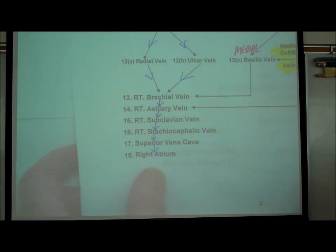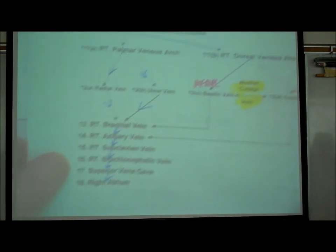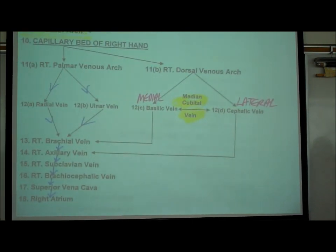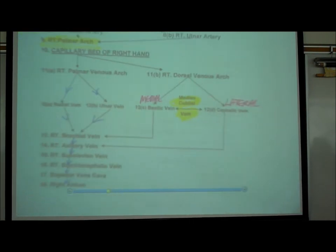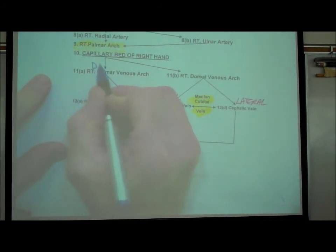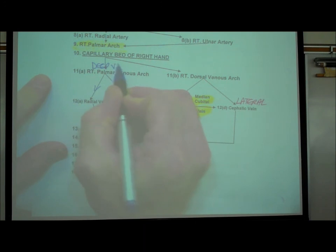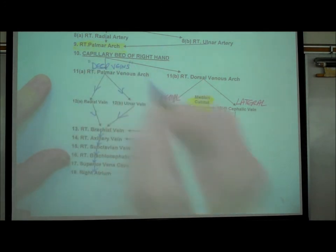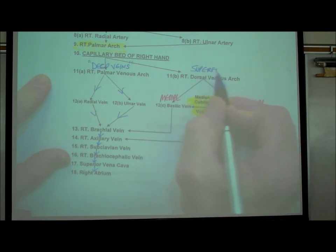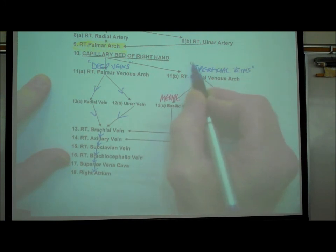Now looking at the superficial veins on this diagram. These are called superficial because they're right near the surface of our skin. We don't have superficial arteries — that would be very dangerous, since we don't want to cut them.